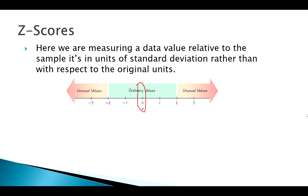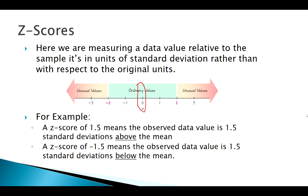So if we're interpreting a z-score, a z-score of 1.5 would mean my given observation is one and a half standard deviations greater than the mean. A z-score of negative 1.5 means my observation is one and a half standard deviations less than the mean.